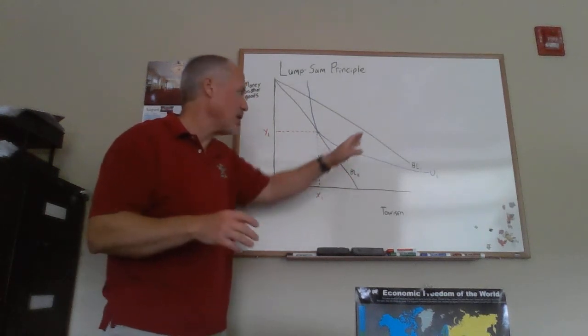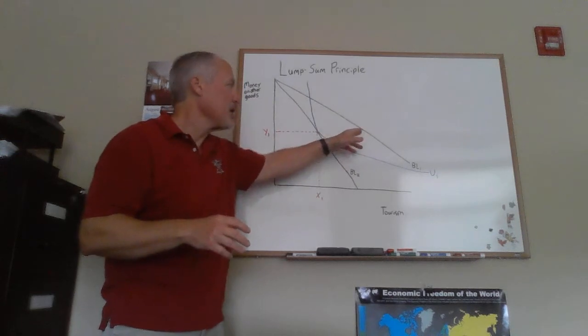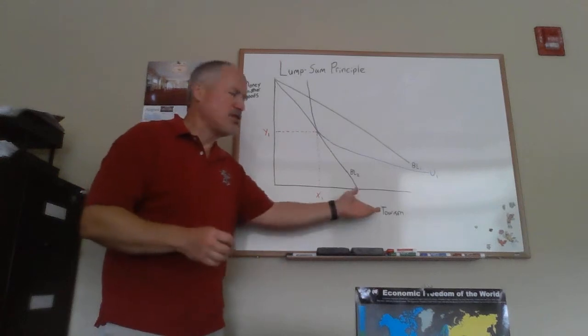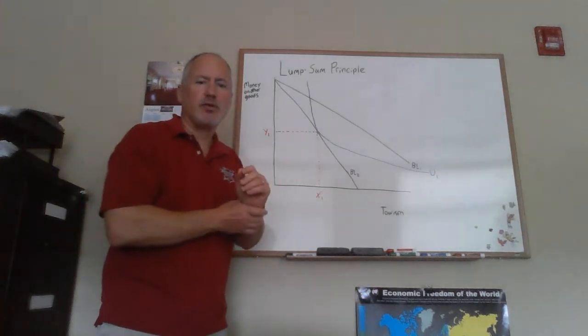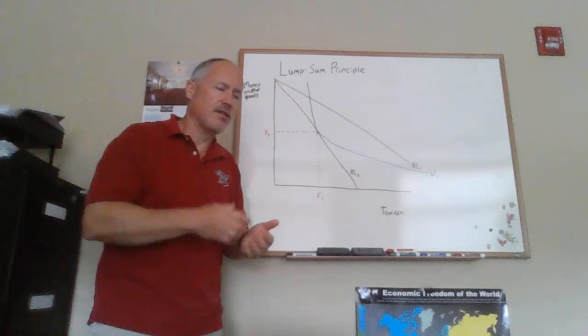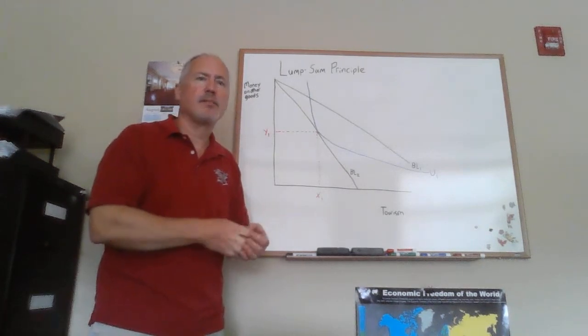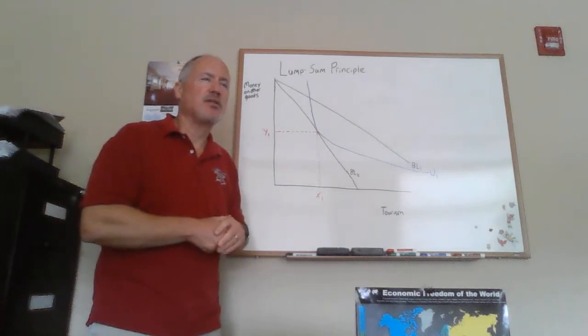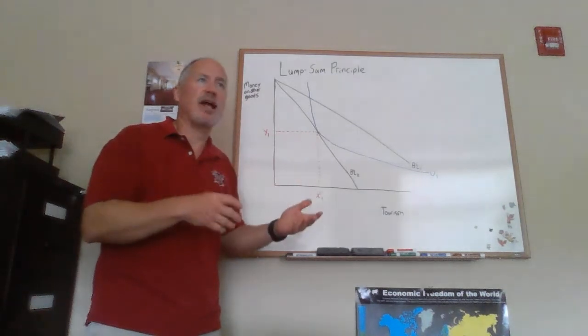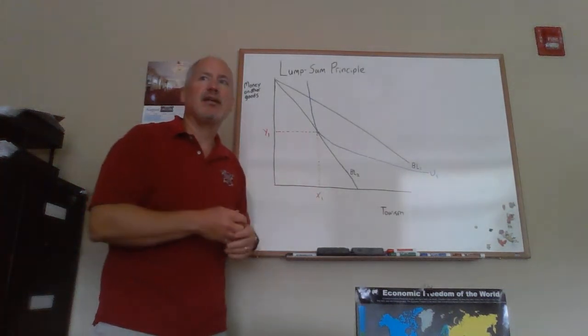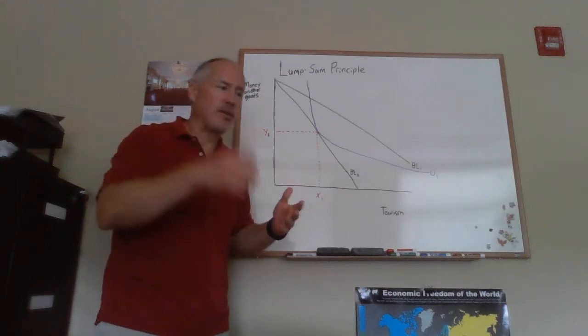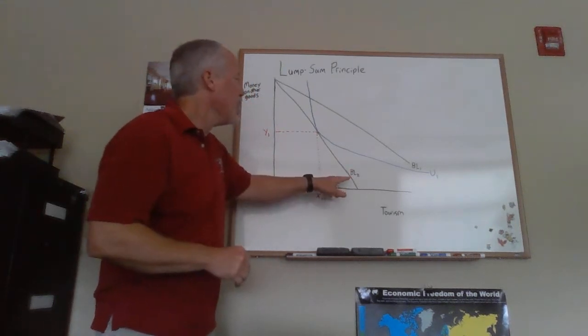The government's imposed what's known as a commodity tax. In this case, the example I'll use is tourism, because you often see high taxes on such things as resorts and rental cars, the types of things that tourists coming into a community would be using. You can tax those pretty heavily, and local residents often think this is a way to get government services paid for by people coming into the community. The point is that this is a tax placed on this good.